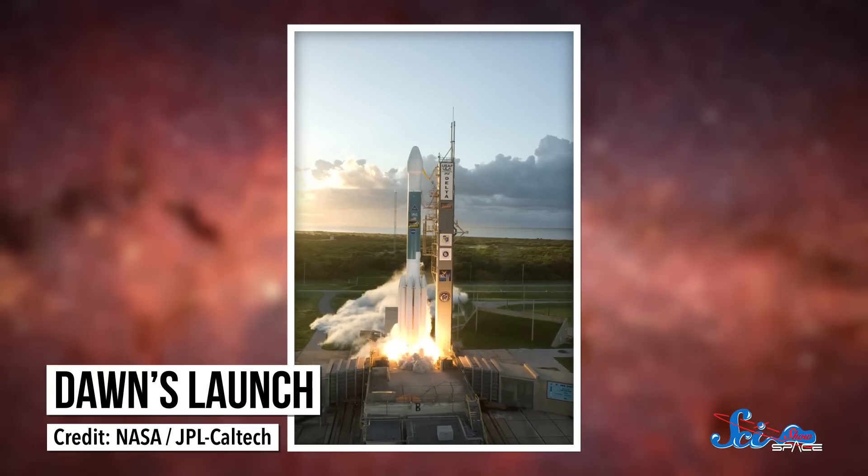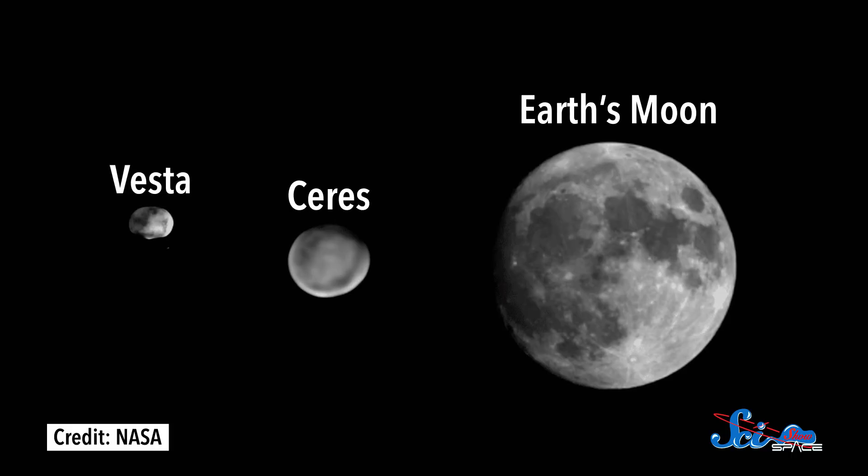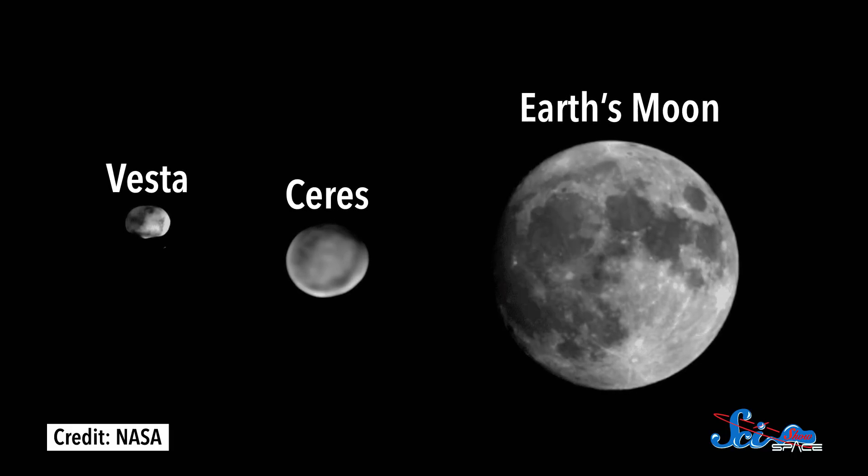So in 2007, NASA launched the Dawn spacecraft to investigate the two largest objects in the asteroid belt between Mars and Jupiter, a giant asteroid called Vesta and an icy dwarf planet named Ceres.